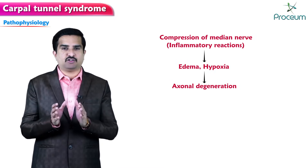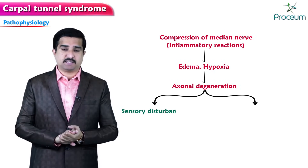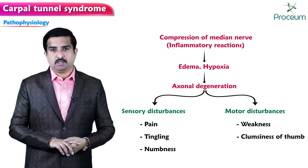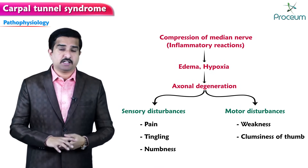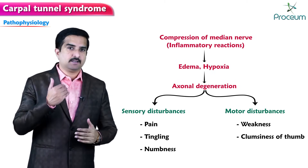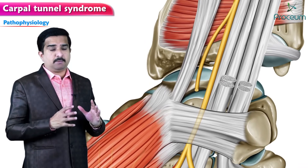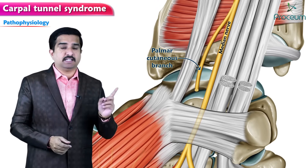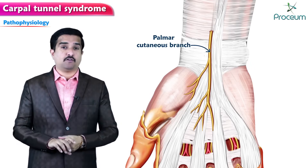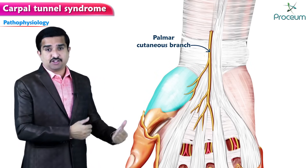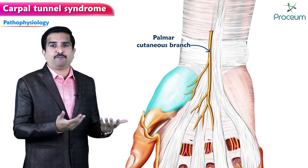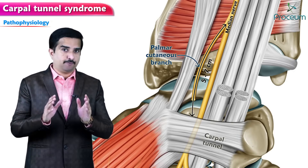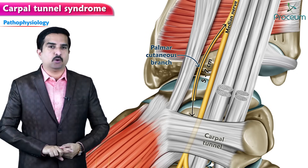Axonal degeneration is characterized by sensory disturbances — pain, tingling, and numbness — and motor symptoms like weakness and clumsiness of the thumb in the area innervated by the median nerve distal to the carpal tunnel. The palmar cutaneous branch of the median nerve arises before the nerve enters the carpal tunnel, so the palmar surface of the thenar eminence is spared. The sensory innervation of this area arises five to seven centimeters proximal to the carpal tunnel and is therefore also spared.